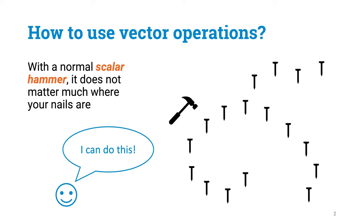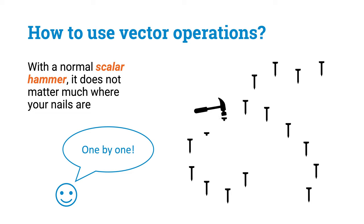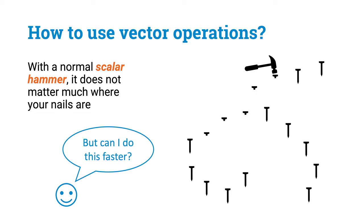You have a construction project in which you need to fasten some pieces of wood with nails. You've got a normal scalar hammer, something all of us have seen, with which you can drive nails into wood. No matter where your individual nails are, you can easily hit them one by one. But this is a sequential world.